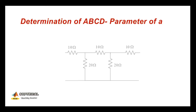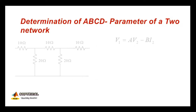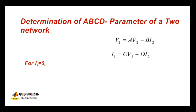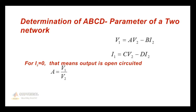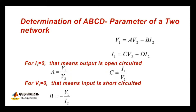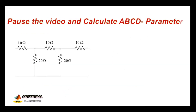Welcome viewers. In this video we will learn how to determine the ABCD parameters. These are the standard equations of a two-port T-network. When I2 is equal to zero, the output terminal is open-circuited and we will get A and C. When V1 is equal to zero, the input is short-circuited and we will get B and D. Pause the video and please calculate the ABCD parameters so you will better learn this experiment.